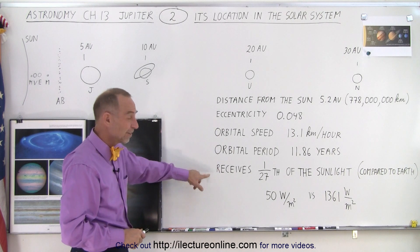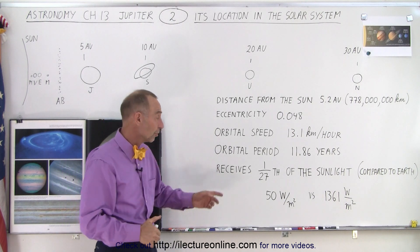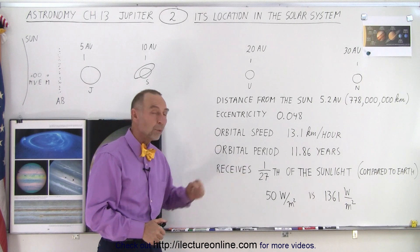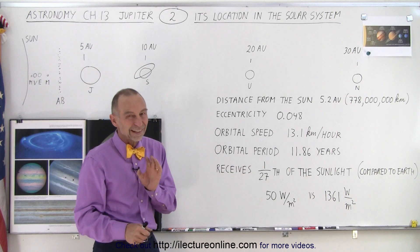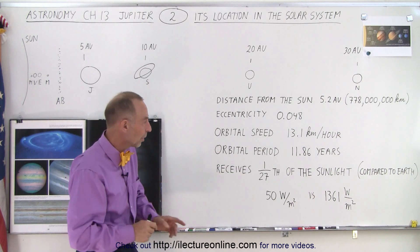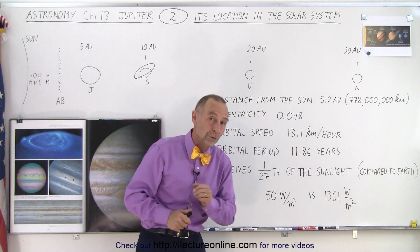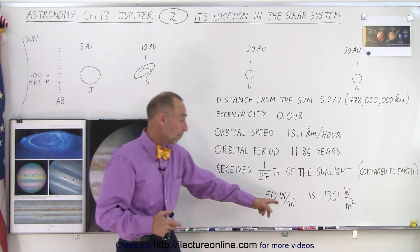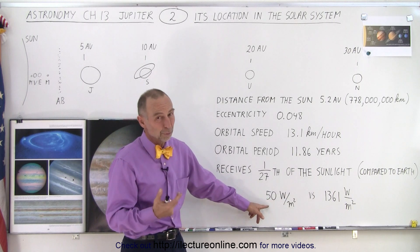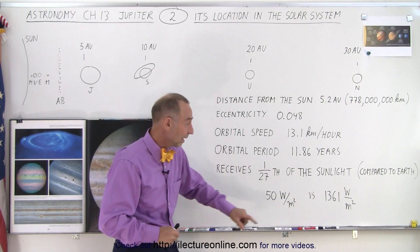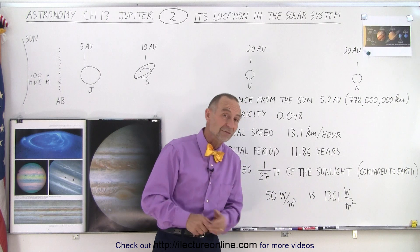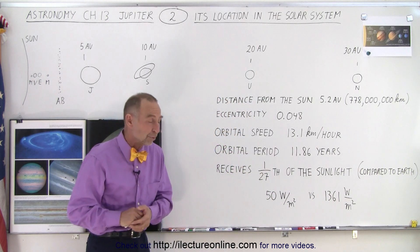At this distance, a little over 5 astronomical units, Jupiter receives about 1/27th, which is slightly more than 4 percent of the sunlight that the earth receives from the sun. So for every square meter of surface, Jupiter only receives about 50 watts as compared to the earth which receives 1361 watts per square meter.